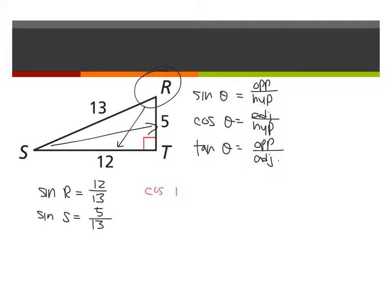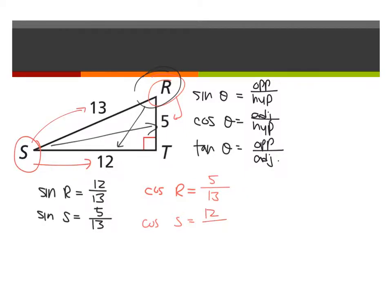What about cosine of R? Looking from R, cosine is the ratio between the adjacent side and the hypotenuse. The adjacent side is 5 units long and the hypotenuse is 13. Cosine of S refers to the ratio between the adjacent side over the hypotenuse. Tangent of R: the opposite side is 12 and the adjacent side is 5. Tangent of S: the opposite side has length 5 and the adjacent side has length 12.